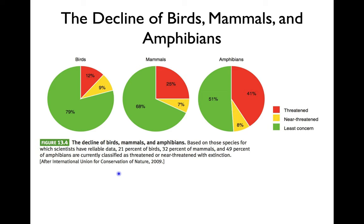The book shows data from 2009 looking at birds, mammals, and amphibians. For birds, 79% are in the least concern category. Mammals, 68%. But amphibians — only 51% are in the least concern category, and 41% of them are threatened. So we're seeing a big issue with amphibians right now, and these are the ones scientists are most concerned about.